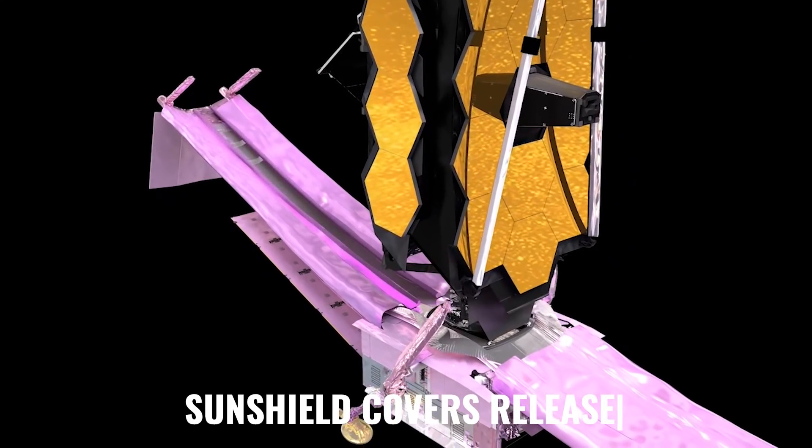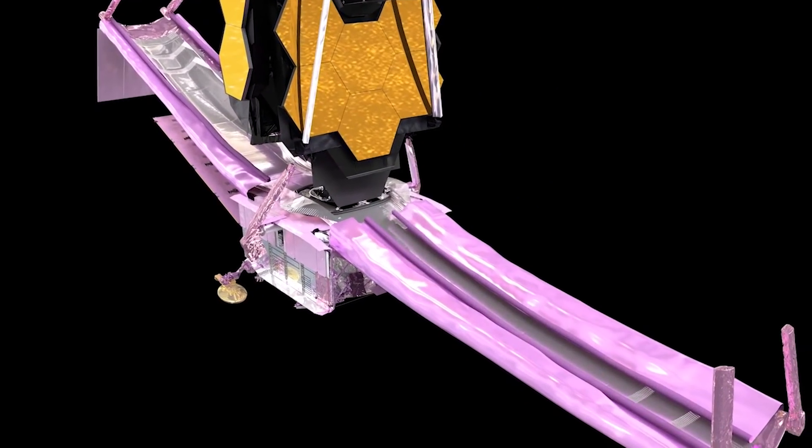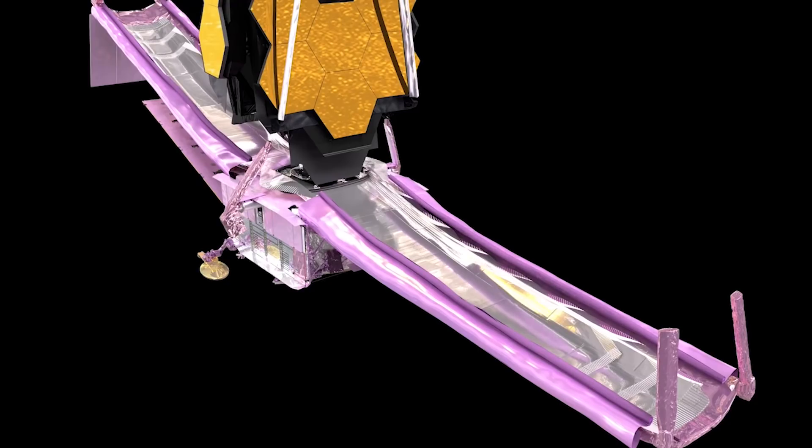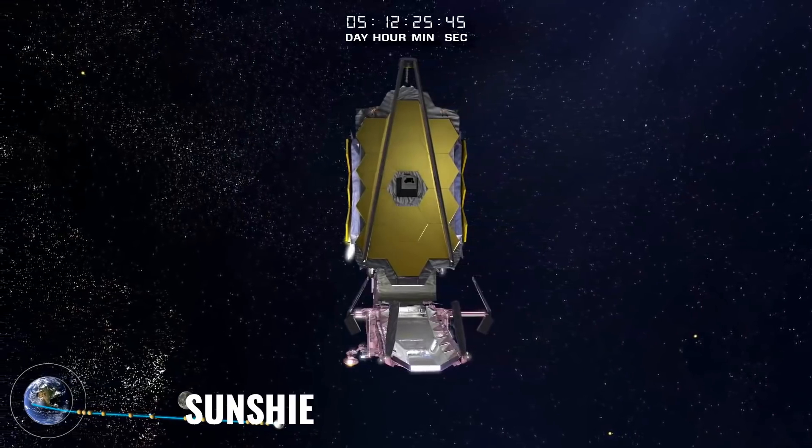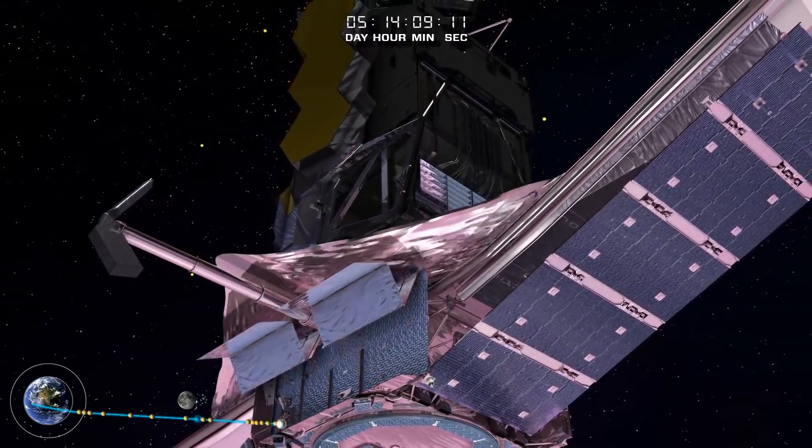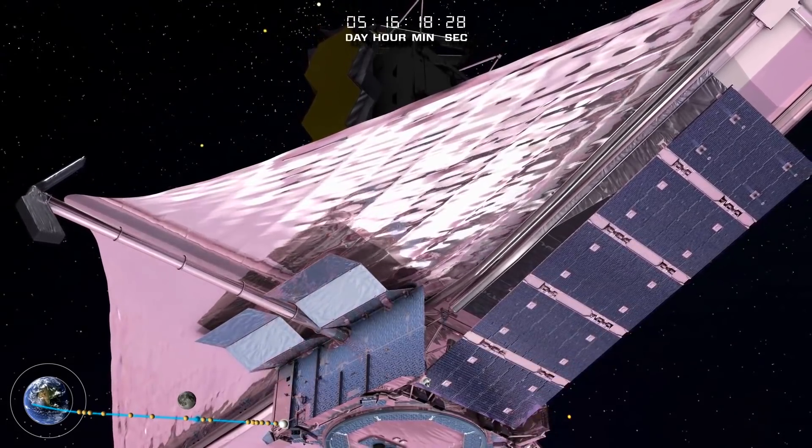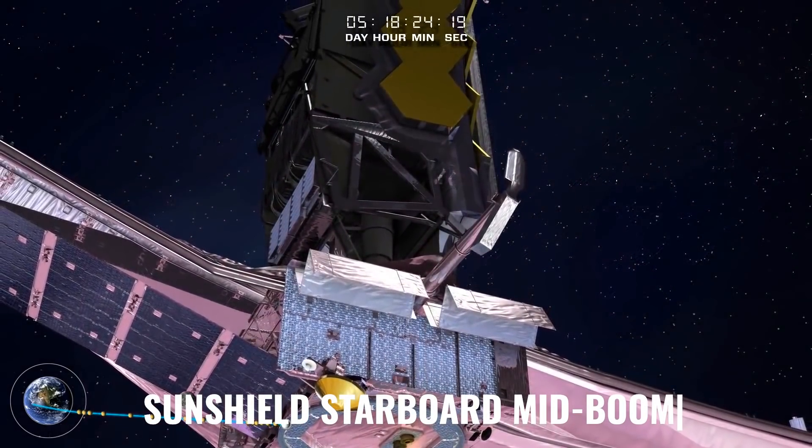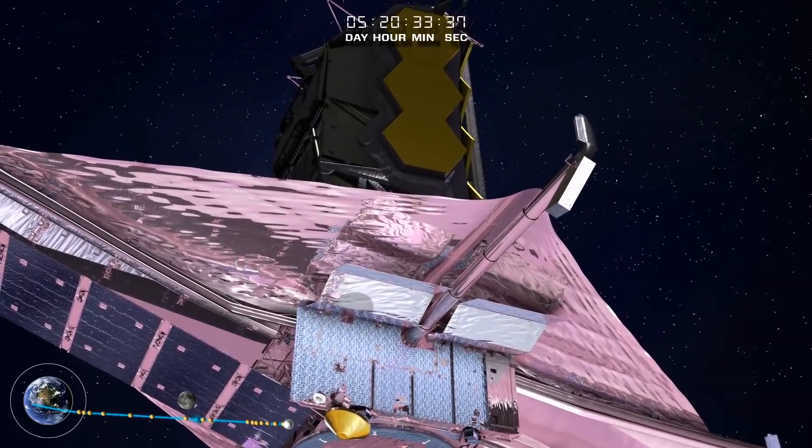Sunshield covers release. This operation releases and rolls up the protective membrane cover. The sunshield release cover has been protecting the membranes during ground and launch activities. Release devices are electrically activated to release the covers. Sunshield port mid-boom. The port mid-boom deployment steps include the completion of the sunshield cover rollup. This operation is a motor-driven deployment. Sunshield starboard mid-boom. The starboard mid-boom deployment steps include the completion of the sunshield cover rollup.